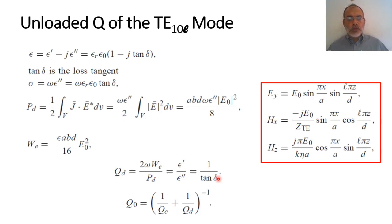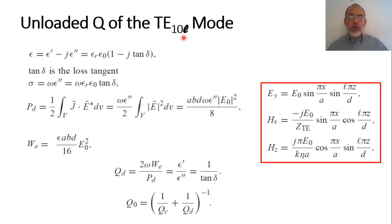Having calculated the quality factor due to conductor loss QC and due to dielectric loss QD, the total unloaded quality factor of the rectangular cavity is given by 1/Q = 1/QC + 1/QD. This completes the analysis of the rectangular cavity resonator in TE10L mode. In the following video we are going to discuss the circular cylindrical cavity based on circular waveguide.